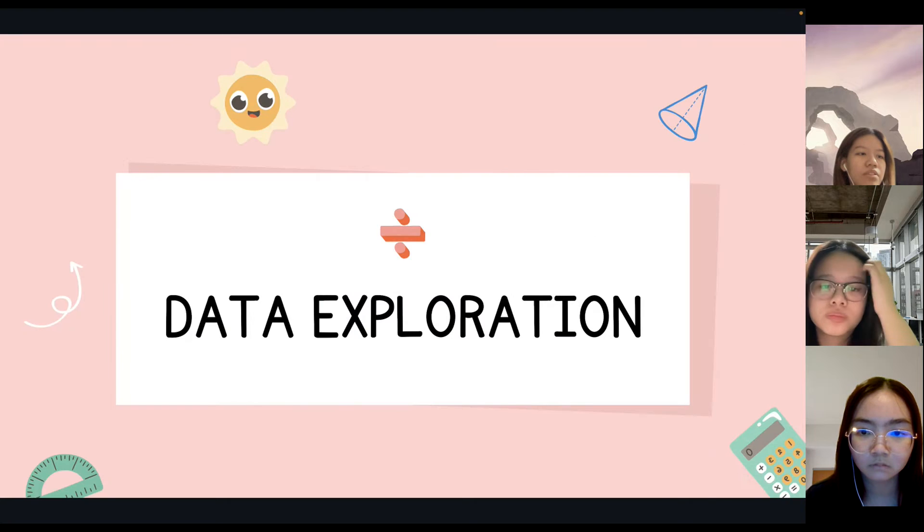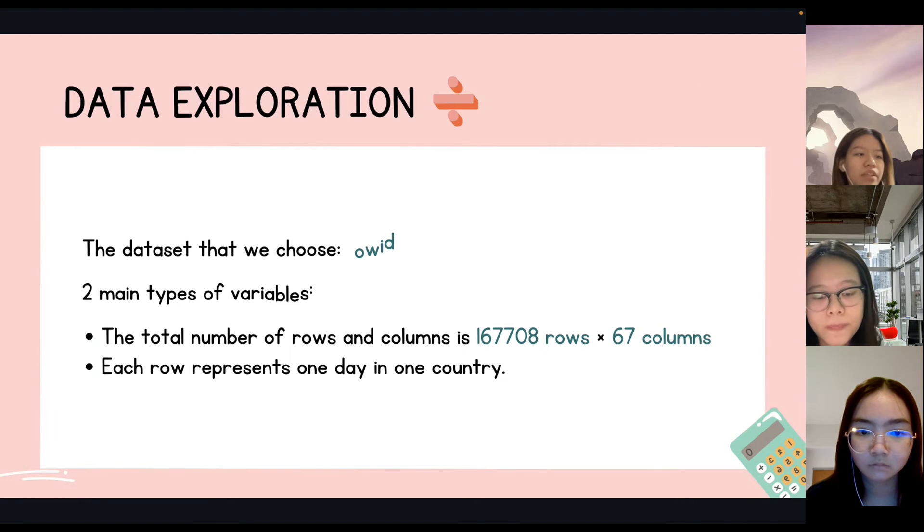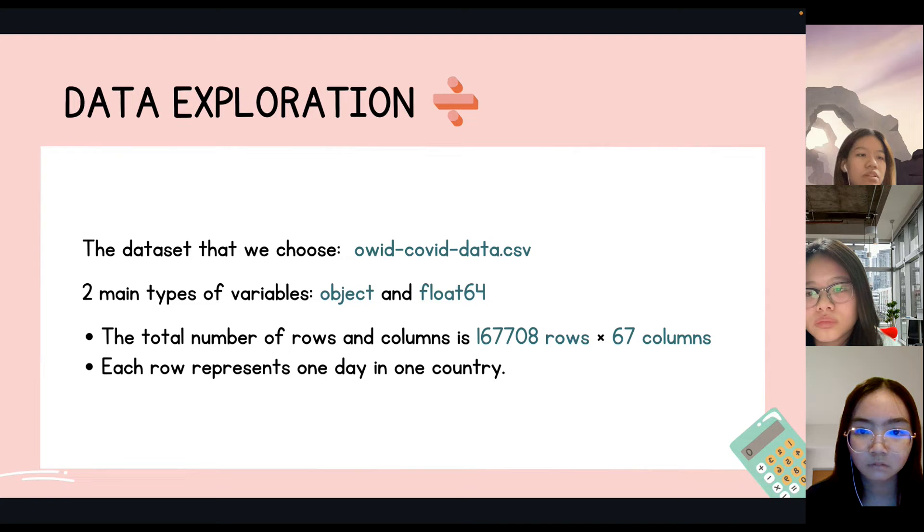The following initial step that we do to understand the dataset is the phase of data exploration. There is a bit of information about the dataset. The main types of variables are objects and float numbers. The data is around 167,000 rows which contain the data on each day for each country from 2019 until the beginning of this year.